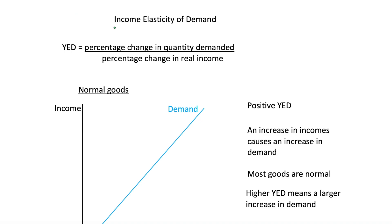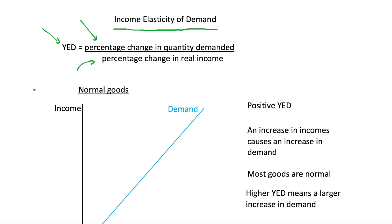In this video we'll be looking again at income elasticity of demand, but this time in the context of normal and inferior goods, and how our YED ties in to what we think about normal and inferior goods. In the previous video we gave an introduction to YED and said that the equation is percentage change in quantity demanded divided by percentage change in real income, and this gives us our YED.